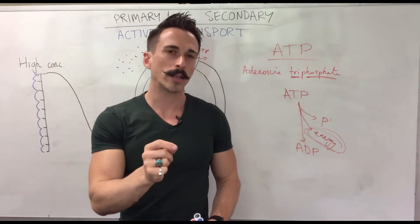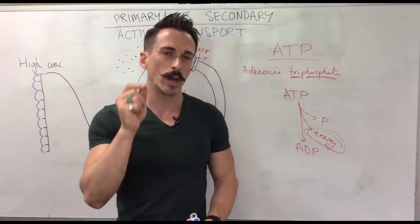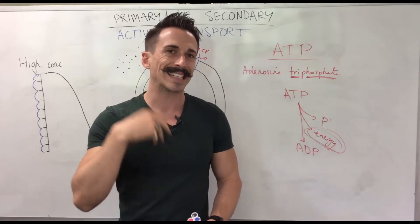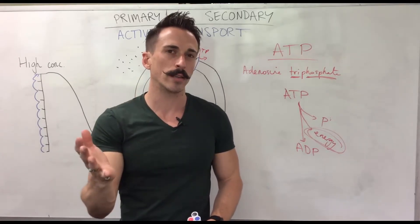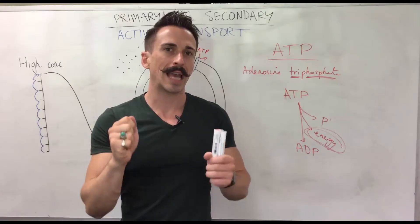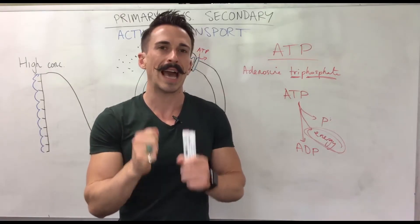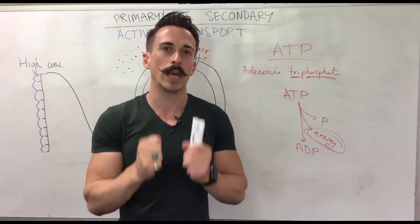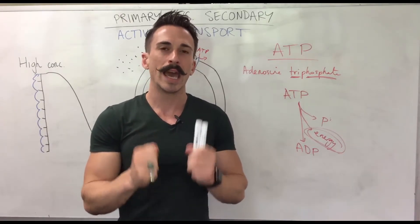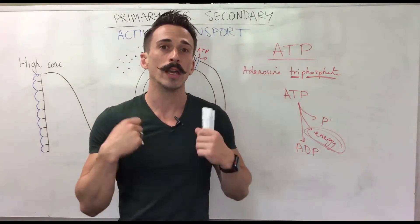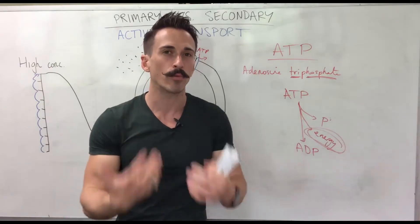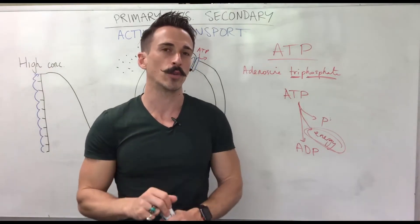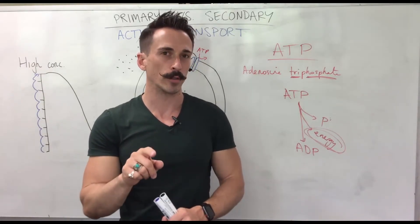Primary active transport is where a single solute goes against its own concentration gradient using ATP as its primary energy source — hence primary active transport. ATP is the primary energy source for the process.